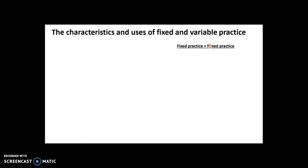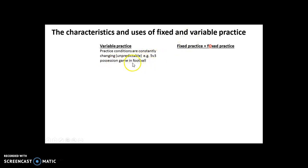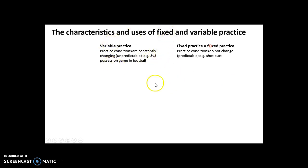Now let's have a look at variable and fixed practice. Variable practice is where the conditions or environment are constantly changing and unpredictable - for example, a 5v3 possession game in football, rugby, netball or hockey, where you're passing, defenders are trying to get the ball, and conditions are always changing. This is very different to fixed practice, where the practice conditions do not change and the environment is predictable - things such as a shot put, or passing through two cones with no defenders.